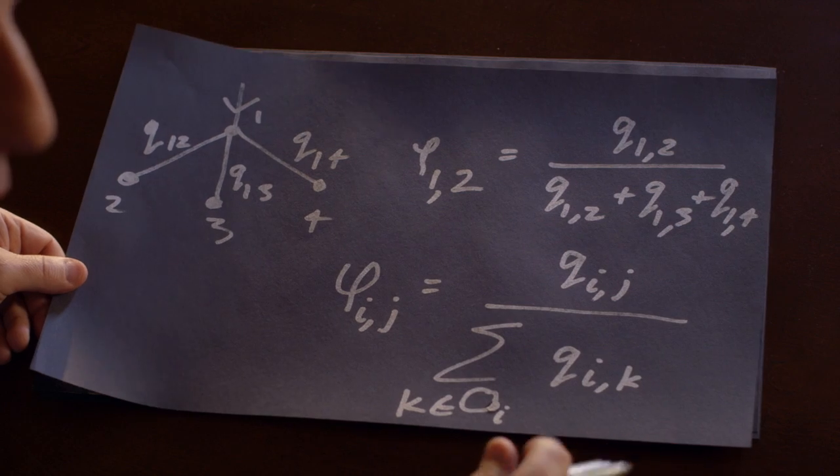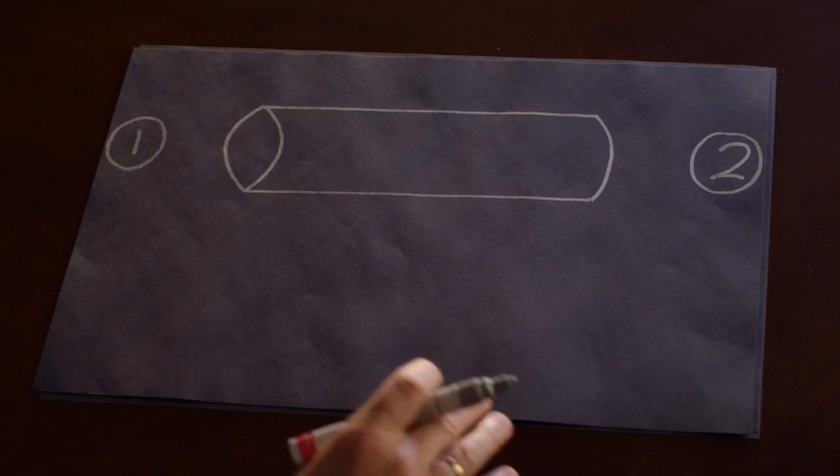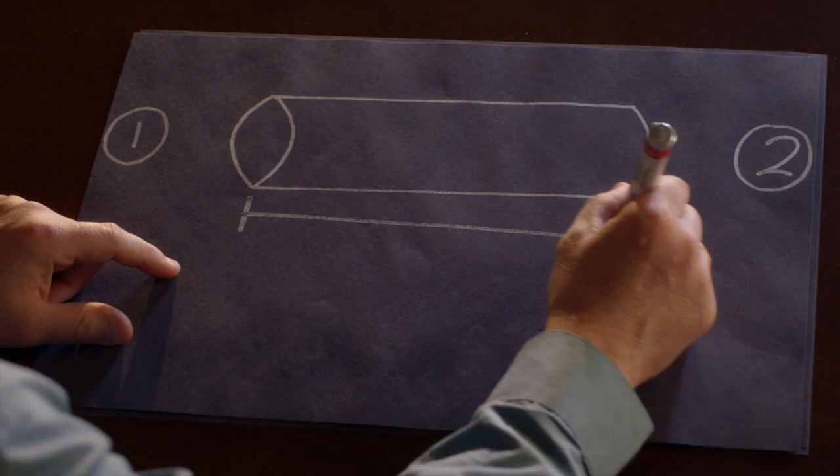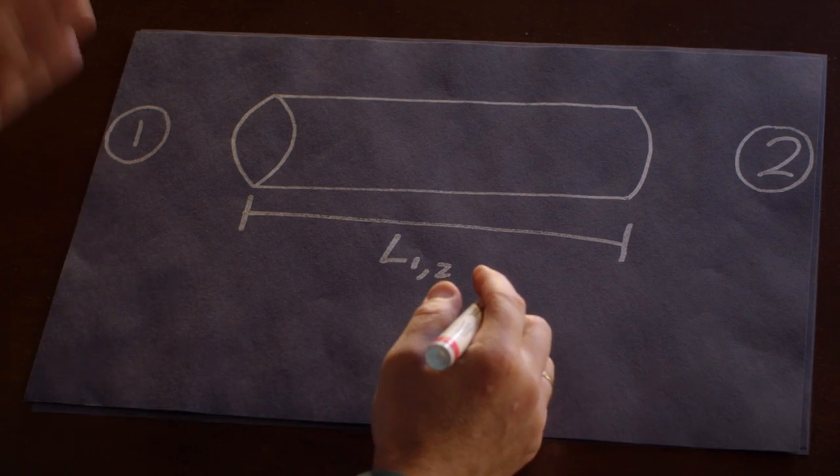Everything depends upon us understanding how these q's are, understanding how the fluid flows from one node to another. It turns out this has been well studied. So if we have a pipe of length l one two because it's going from node one to node two,